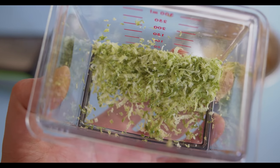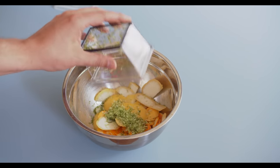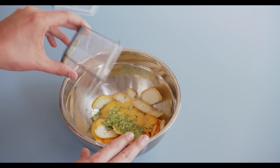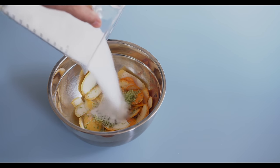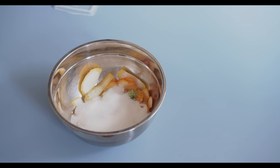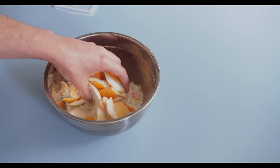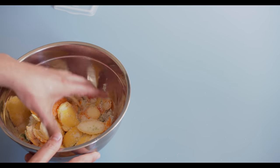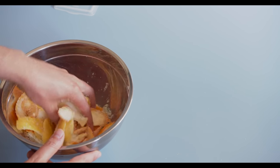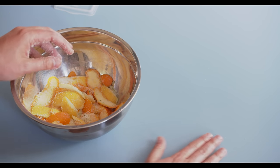So once we've zested the lime, it's time to create what's known as our oleosacrum. And what this is, is essentially a very intensely flavored sugar mixture. So to do this, mix in one half cup of sugar in with the citrus and give this a good mix. We really want to make sure that the sugar is coating every single citrus peel here. Now, as the citrus sits in the sugar, the very potent oil contained in the peel will get extracted.